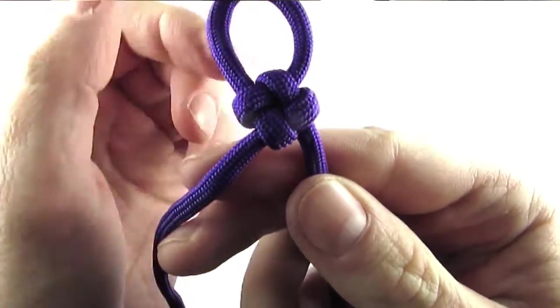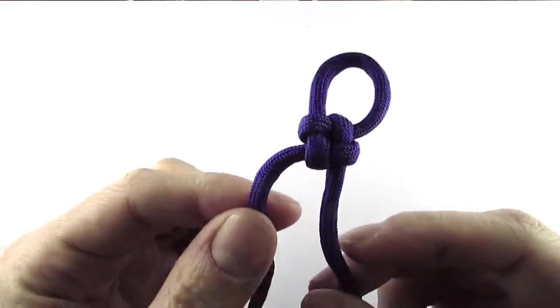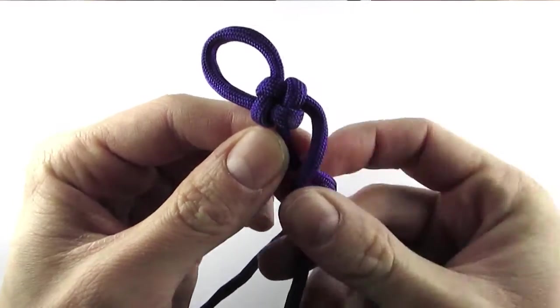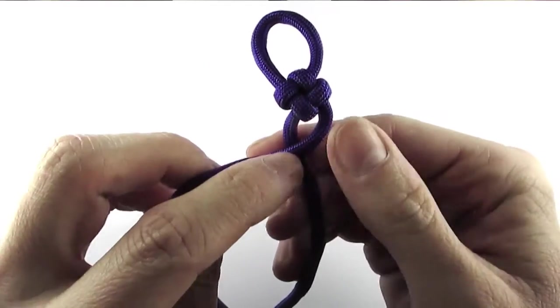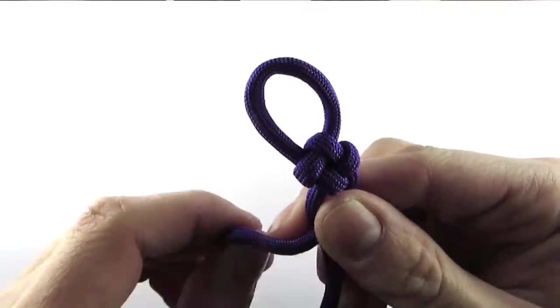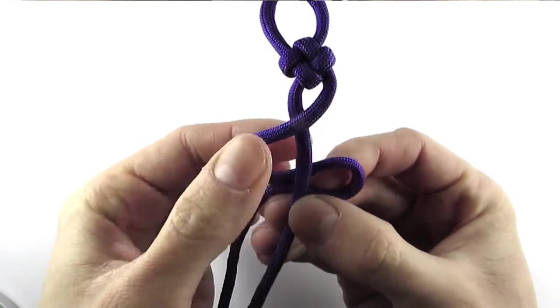And then once this knot is tied, start tying another one the same way we did before, by passing the right cord over the left, then behind two times.